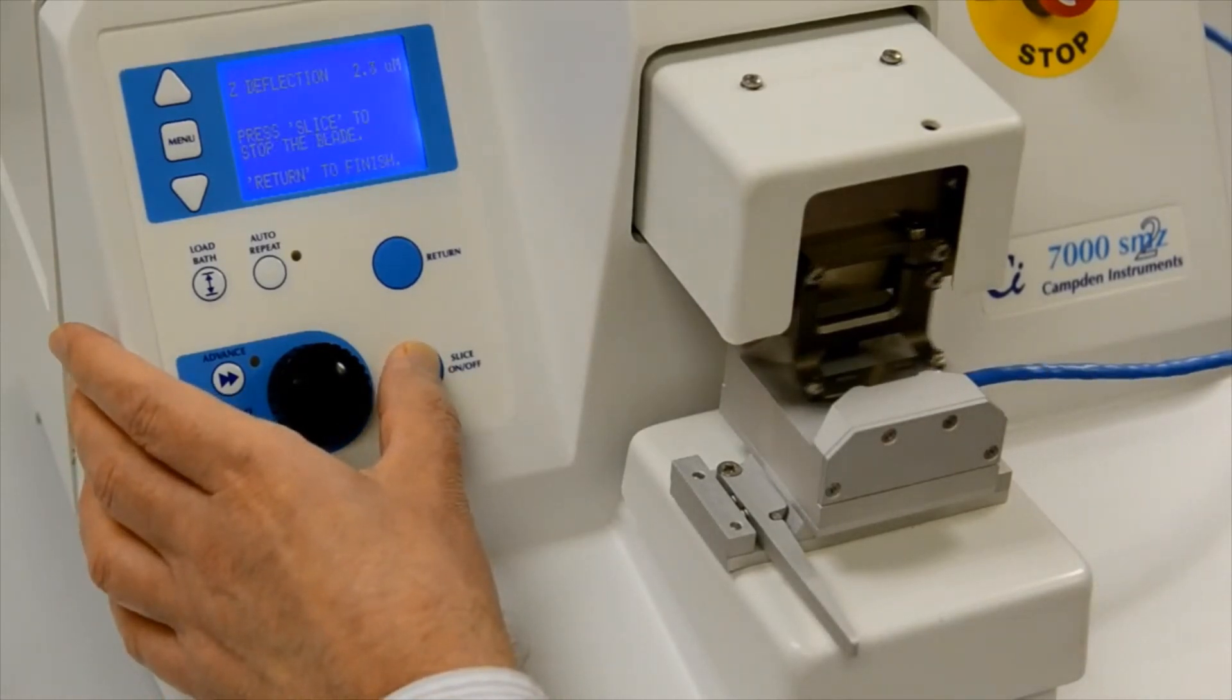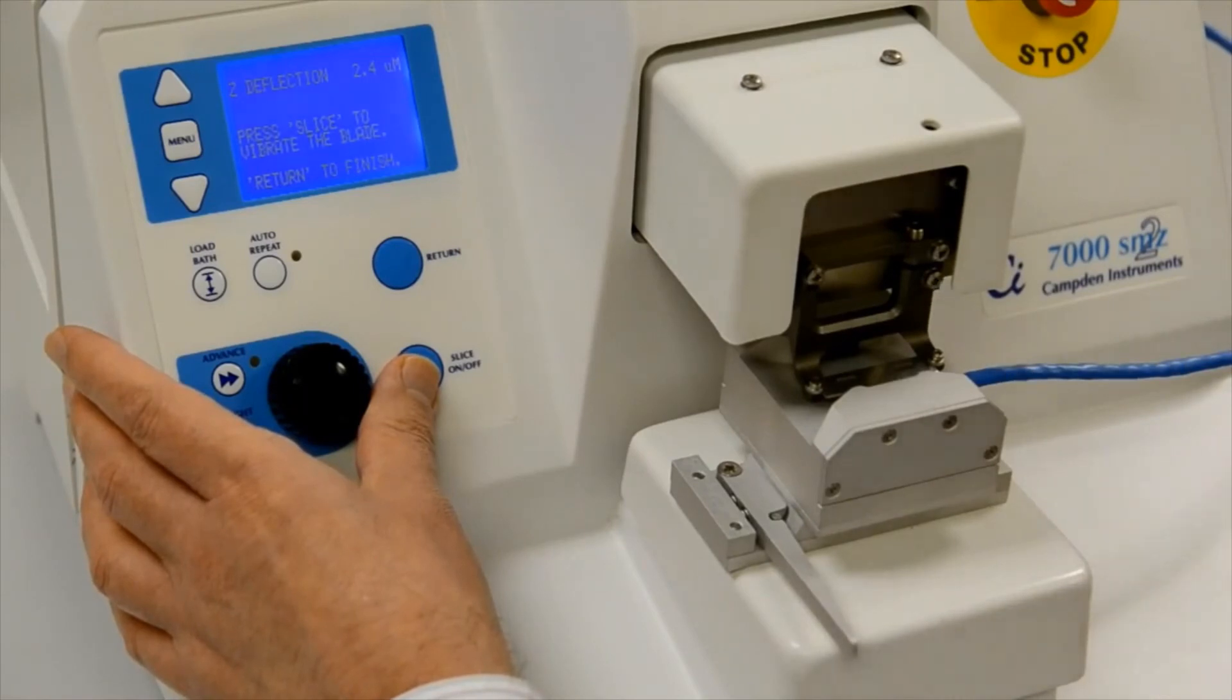Retighten the lower screw and press the Slice On-Off key to start vibration. The Opti-Cal will reassess the blade alignment error.